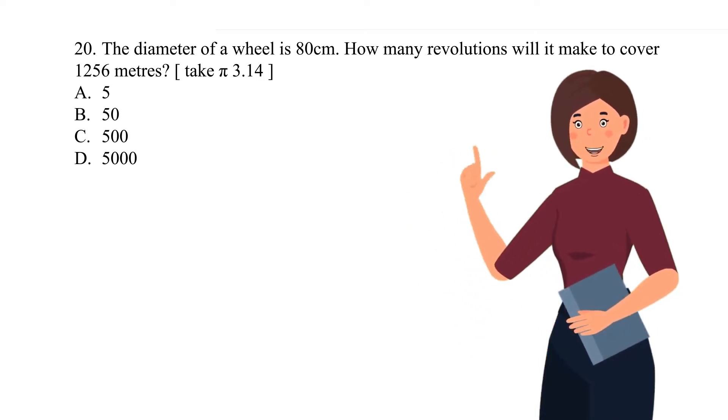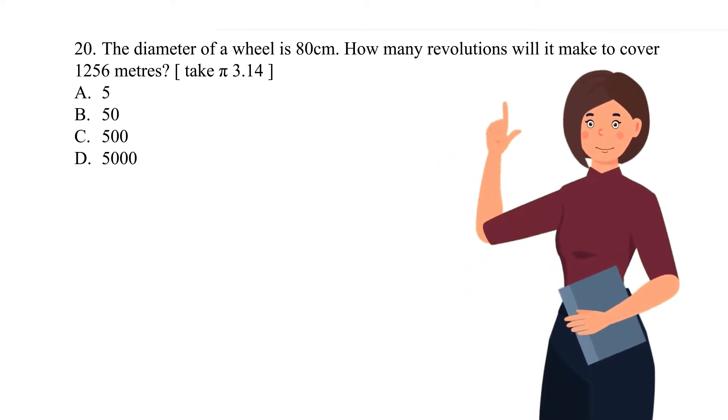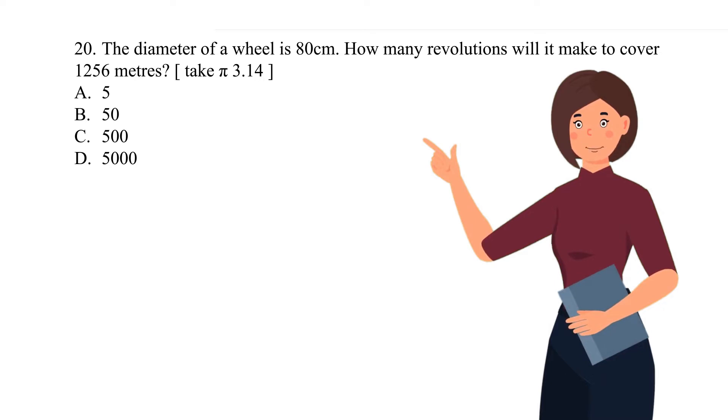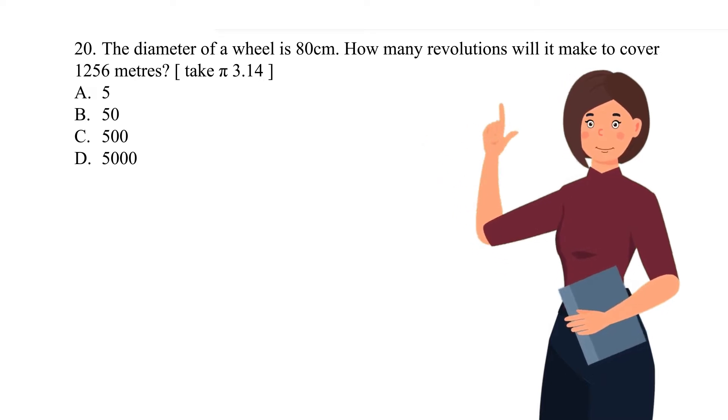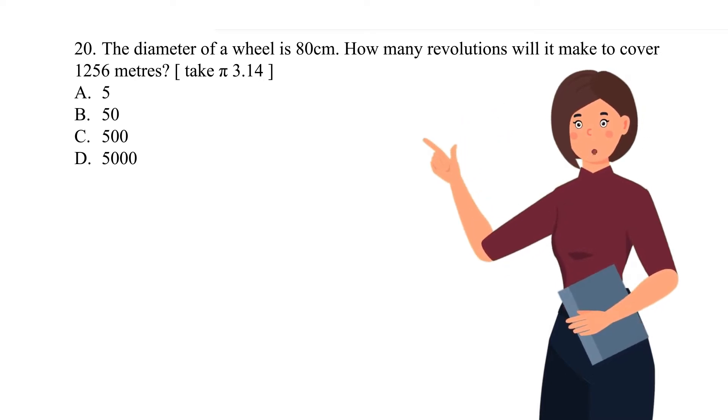Question 20. The diameter of a wheel is 80 centimeters. How many revolutions will it make to cover 1,256 meters? Take pi as 3.14.